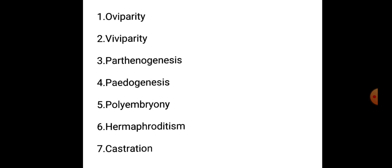There are seven types of reproduction found in insects. These are: oviparity, viviparity, parthenogenesis, pedogenesis, polyembryony, hermaphroditism, and castration.